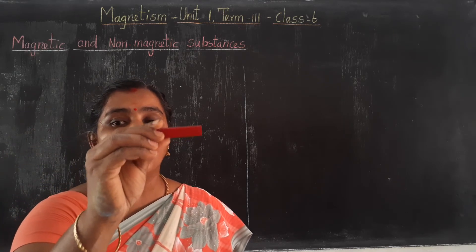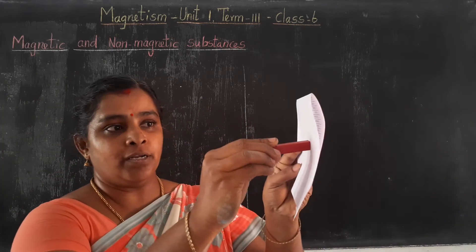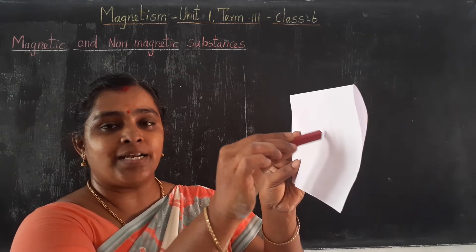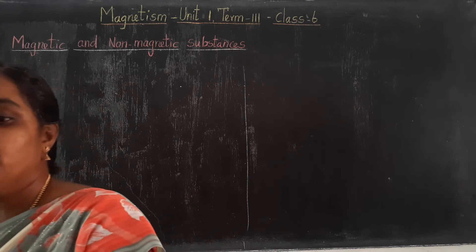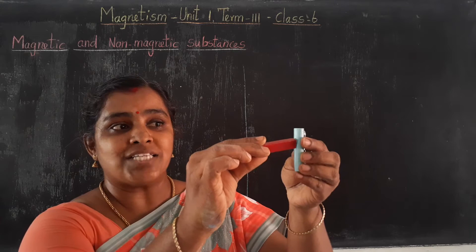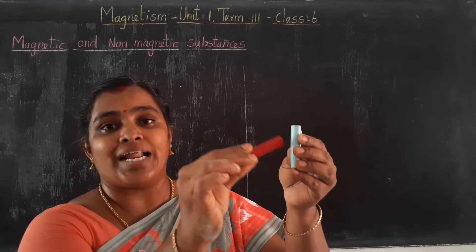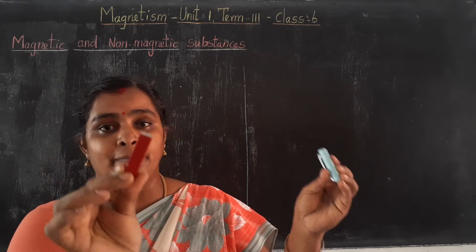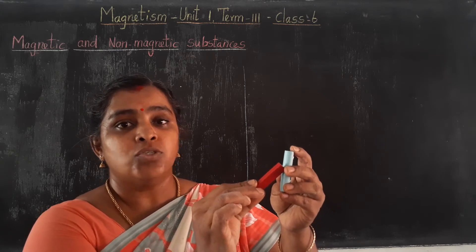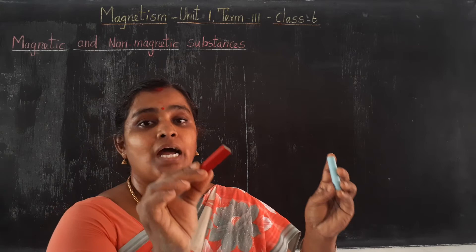Look at this. This is the bar magnet. When I bring this bar magnet closer to the paper, we can notice that the paper is not attracted by this magnet. Again, when I bring this magnet closer to the plastic, the plastic is also not attracted by the magnet. So, in these two substances, the magnet cannot attract them.